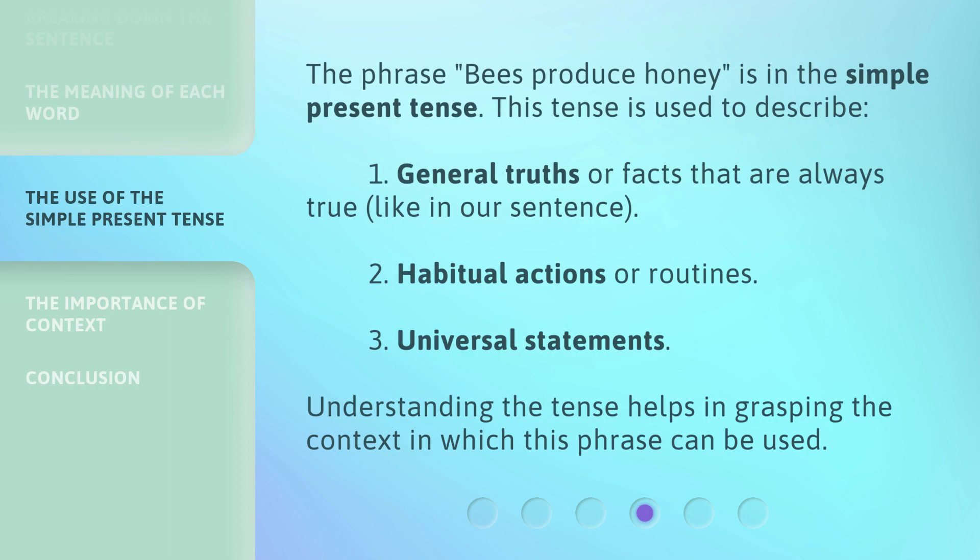The phrase 'bees produce honey' is in the simple present tense. This tense is used to describe: 1. General truths or facts that are always true, like in our sentence. 2. Habitual actions or routines. 3. Universal statements. Understanding the tense helps in grasping the context in which this phrase can be used.